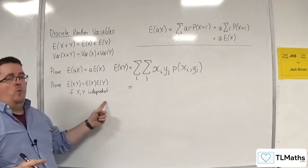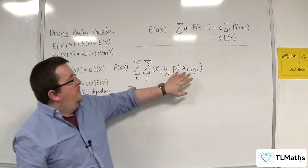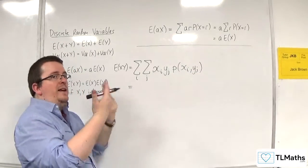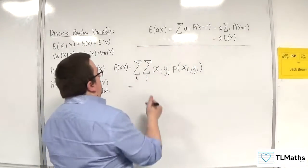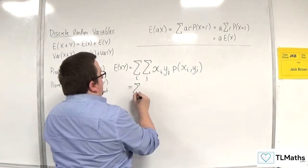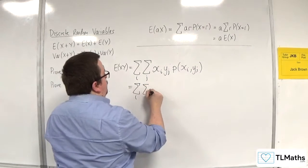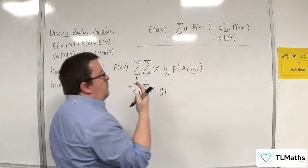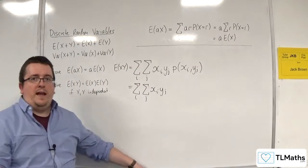Now, if X and Y are independent, then the probability of xi, yj, of both xi and yj happening, we've learnt that from first-year A-level maths.